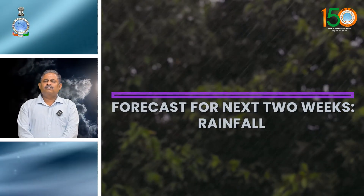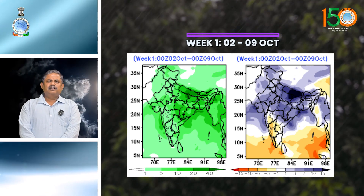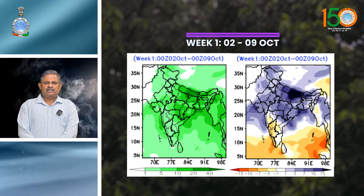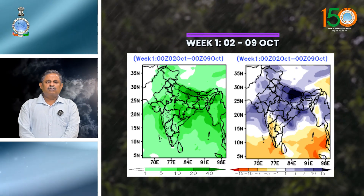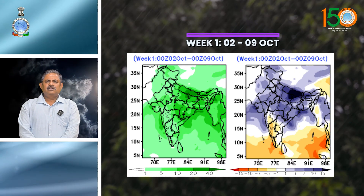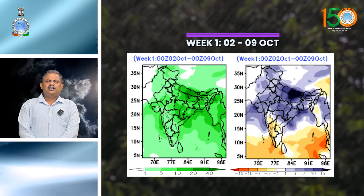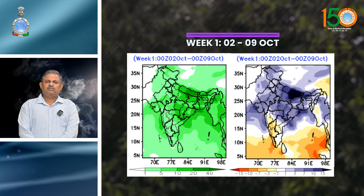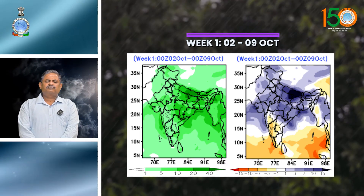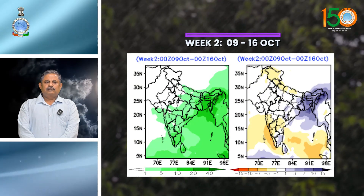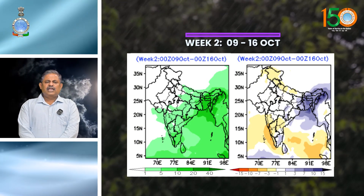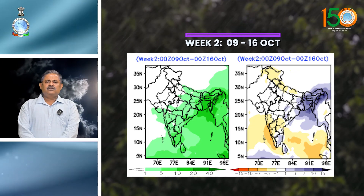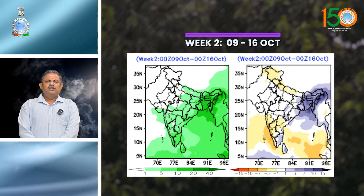Now the forecast summary: for Week 1, under the influence of the deep depression over west central and adjoining northwest Bay of Bengal, heavy to very heavy rainfall with extremely heavy rainfall at isolated places is likely over south Chhattisgarh, Odisha, and north coastal Andhra Pradesh today, and over Bihar on 3rd and 4th October. The fresh western disturbance is likely to cause heavy to very heavy rainfall over northwest India during 5th to 7th October with peak intensity on 6th October. Conditions are not favorable for further monsoon withdrawal this week. For Week 2 (9th to 15th October), under the influence of a likely low pressure area formation, fairly widespread to widespread rainfall with isolated heavy to very heavy rainfall is likely over most of east and northeast India during the first half of Week 2.